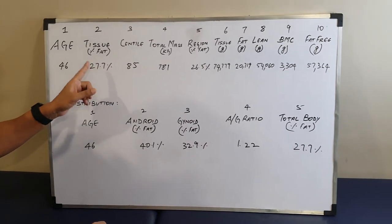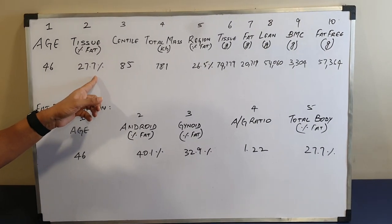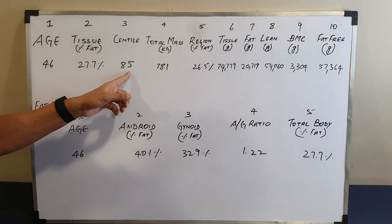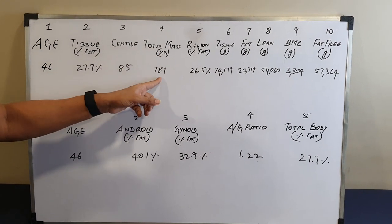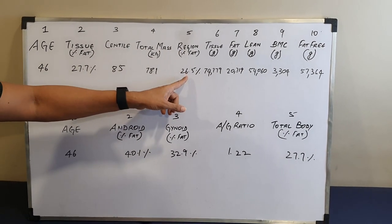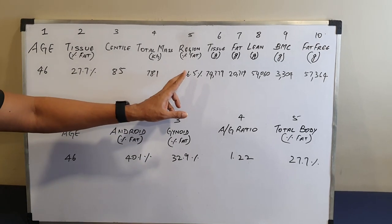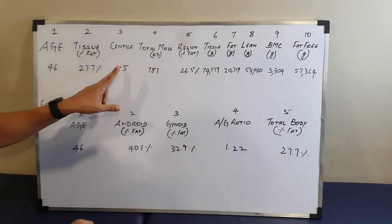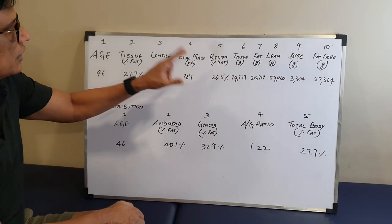Tissue fat percentage is the fat percentage you have in your body as a whole. Centile is your ranking. Total mass is your weight. Region percentage fat is the percentage fat in relation to your overall body weight, that is 78.1.